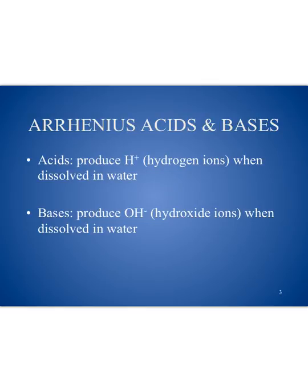Let's move on to definitions of acids and bases. Our first definition is the Arrhenius definition. It is based on what is produced when the acid or base is in water. Acids will produce hydrogen ions, and bases will produce hydroxide ions.